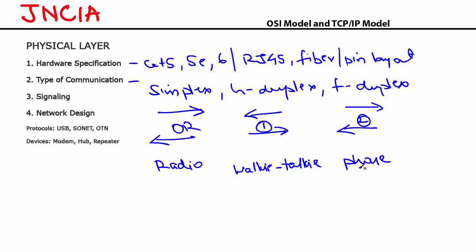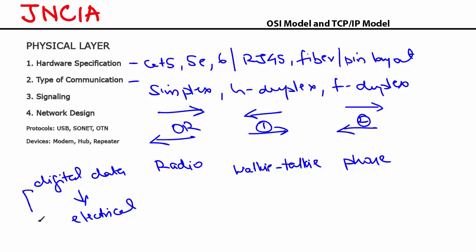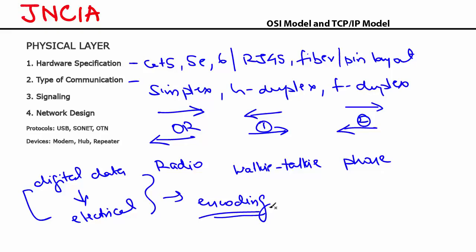The other important function of the physical layer is signaling, which means converting your digital data into electrical signals that can be sent over your cables. This whole process is known as encoding. There are different ways of encoding — one technique is Manchester encoding and another is differential encoding. These techniques define how to convert your digital data, your ones and zeros, into electrical signals that can be transmitted over cables.